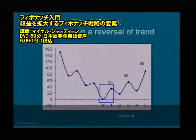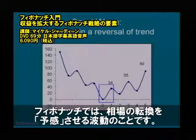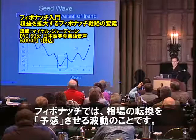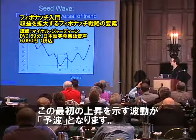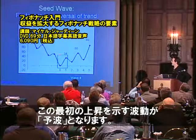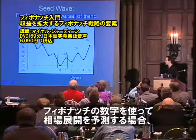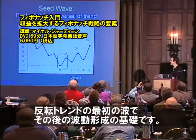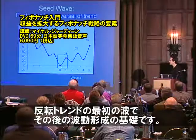Now I'd like to introduce the concept of what I call the seed wave. The seed wave is a term that was first used in sound wave electronics, and a friend of mine, Randall Lockhart, applied the same term to Fibonacci trading. The seed wave is simply the first wave in a reversal of trend. Prices are coming down, you've got your 1, 2, 3 reversal, and that first wave is what we call the seed wave. When you're using Fibonacci numbers to apply them to the growth or retracement of a trend, the only place to apply those is to the seed wave — because it's the first wave in the new trend, and it forms the seed for all subsequent waves. That's why we call it the seed wave.